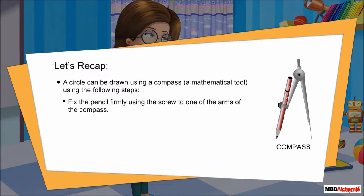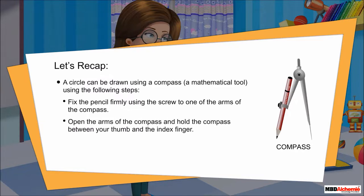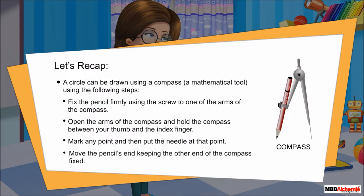Fix the pencil firmly using the screw to one of the arms of the compass. Open the arms of the compass and hold the compass between your thumb and the index finger. Mark any point and then put the needle at that point. Move the pencil's end, keeping the other end of the compass fixed.